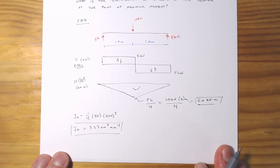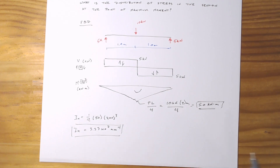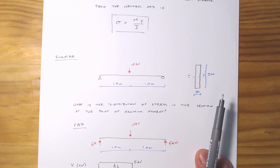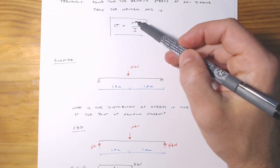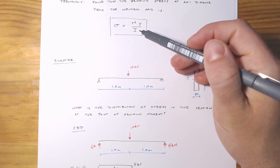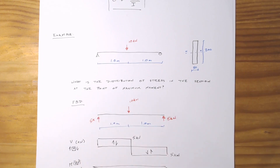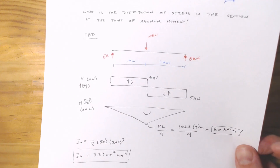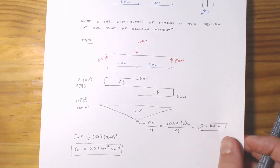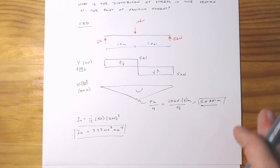At this stage, after all the work on the parallel axis theorem, this should be pretty straightforward to apply. Now all we have to do is — we have all the pieces: we've got the maximum moment, we know our section geometry so we can determine y, and we know our moment of inertia. We just have to work out the distribution of stress across the section. We'll draw a little diagram and go through this slowly and step-by-step since this is the first time we're doing it, to make sure everything is nice and clear.